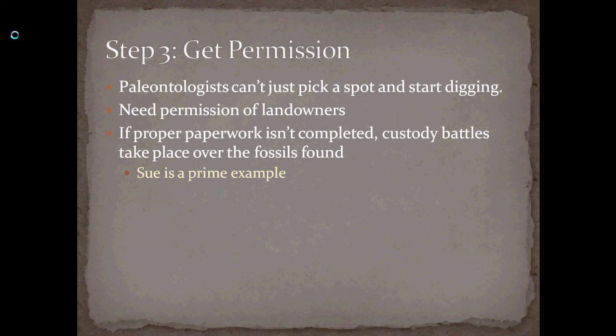So the federal government seized the fossil and returned it to the landowner. The rancher — who they'd already paid — then auctioned it off for $8 million, and now it's housed at the Field Museum instead of at the Black Hills Institute in South Dakota, which was where the team of explorers who were working on it were based — really a museum that should have had it. So it was a very messy process and there are still some hard feelings left over, even after more than 10 years. Make sure you have permission before you do prospecting — that's the moral of the story.